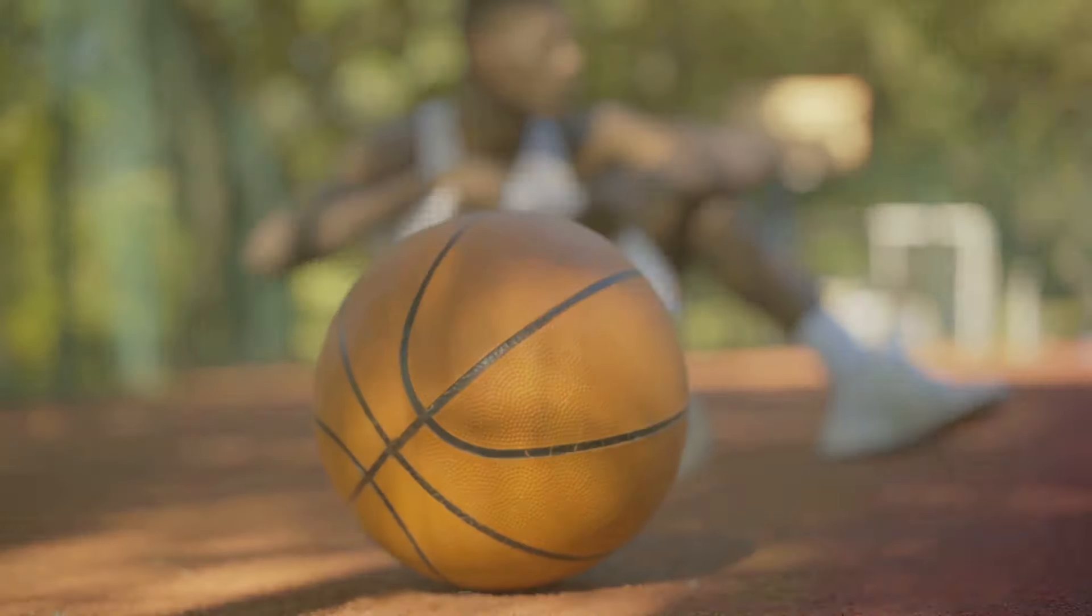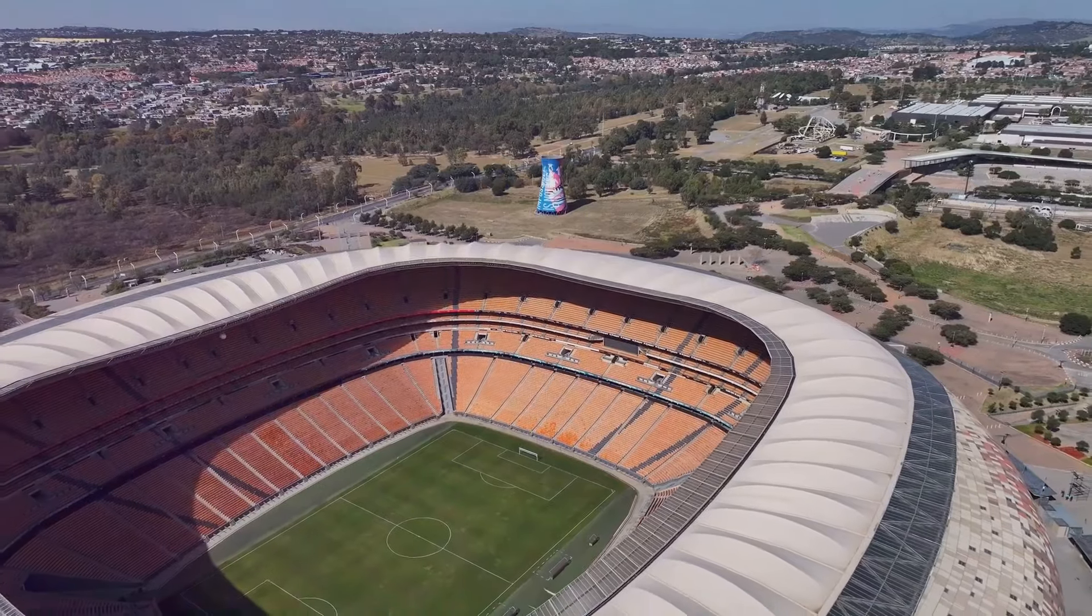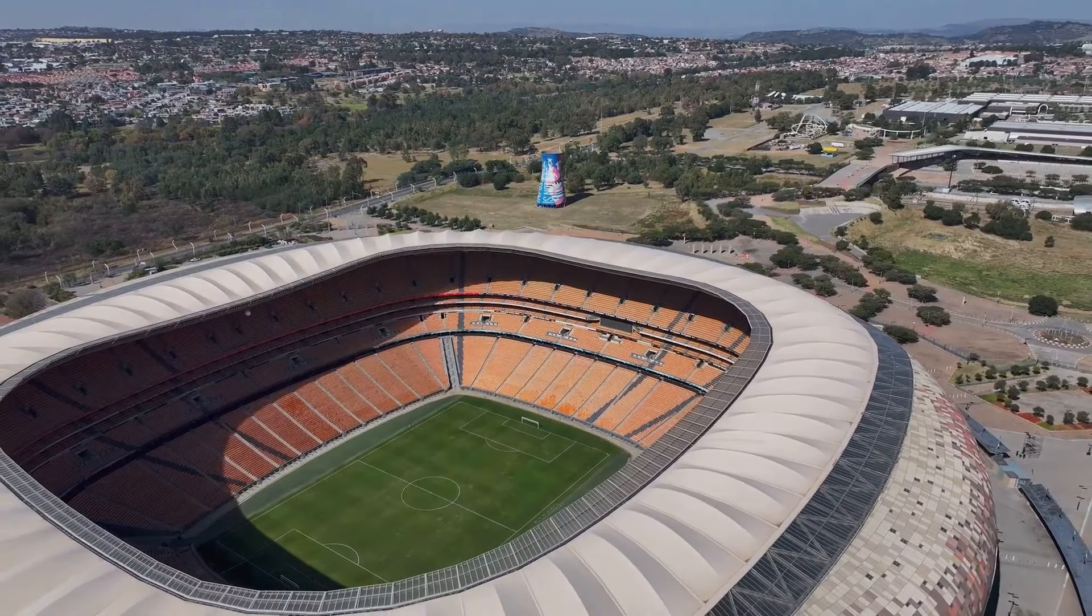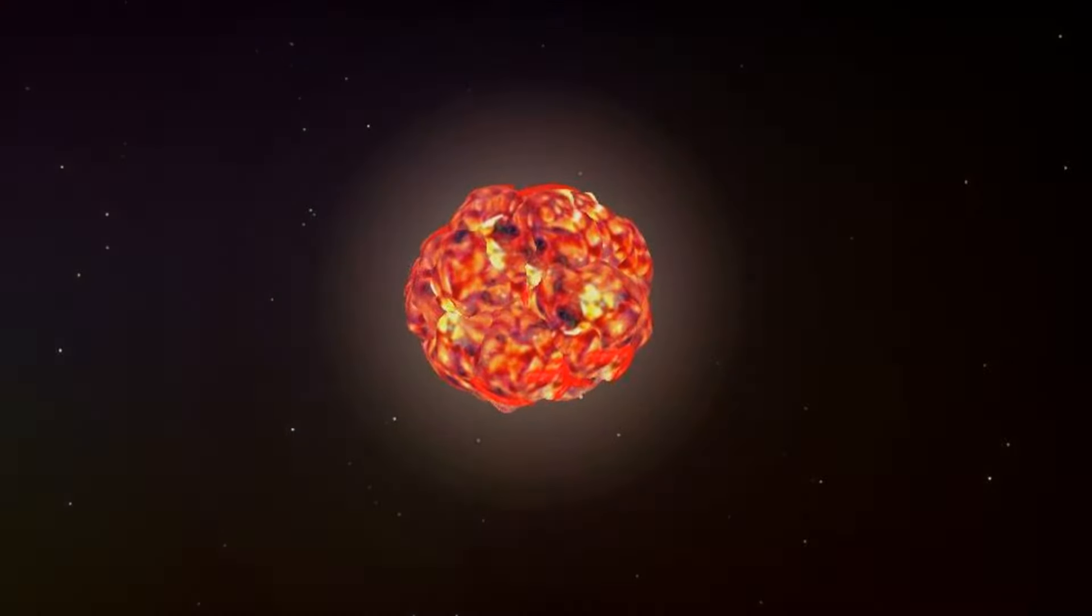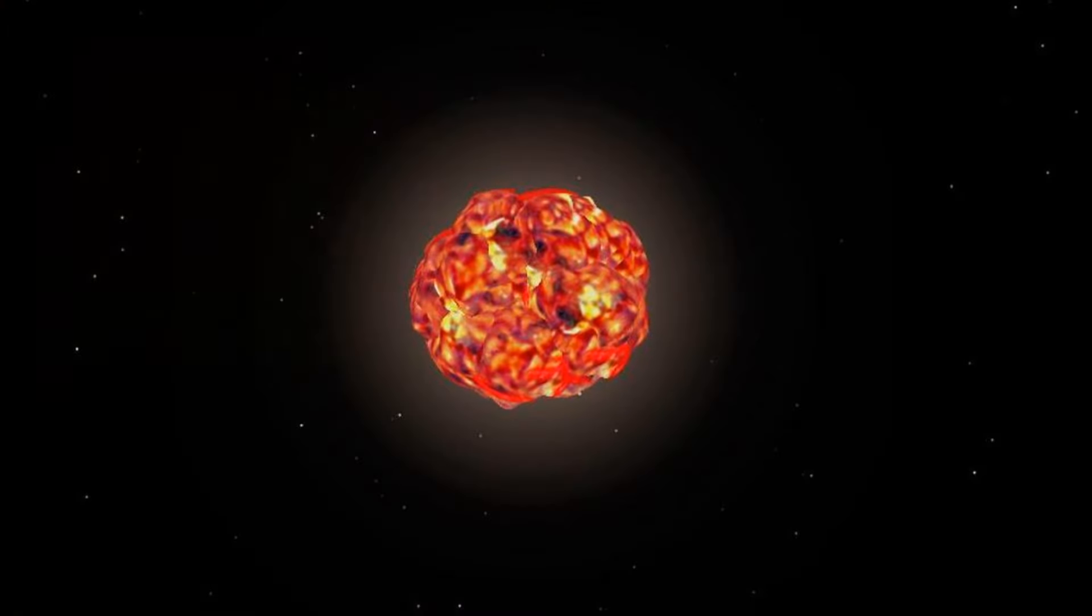To put that into perspective, if our sun were the size of a basketball, Betelgeuse would be as large as a stadium. Or if we replaced our sun with Betelgeuse it would stretch past Jupiter's orbit. But it's not just its size that makes it so captivating, its other physical characteristics are equally fascinating.